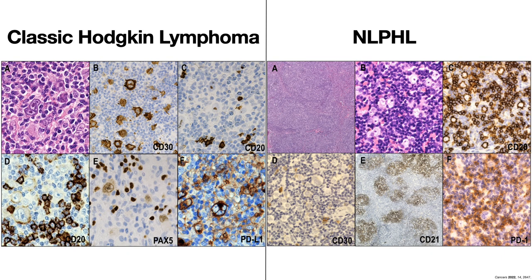The next picture shows a contrast between classic Hodgkin lymphoma and nodular lymphocyte predominant Hodgkin lymphoma. On the left, in figure A, you can see the histological features of classic Hodgkin lymphoma: it is composed of Hodgkin cells, which are uninuclear, and Reed-Sternberg cells, which are binucleated, with abundant reactive bystander cells forming a typical tumor microenvironment.